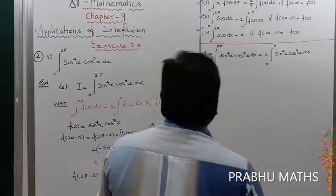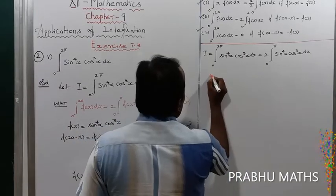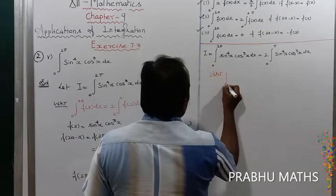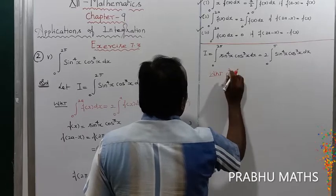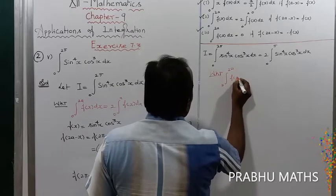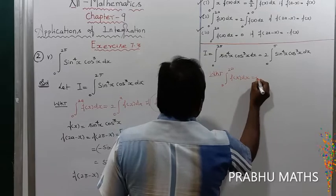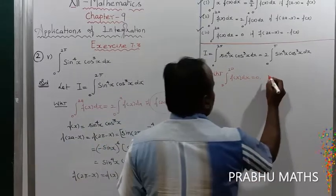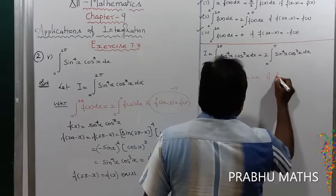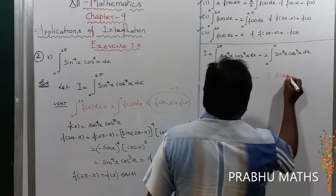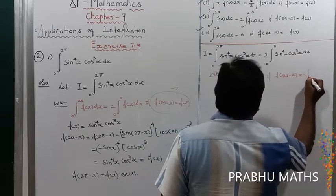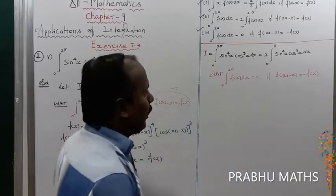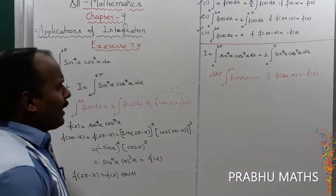Next, for this inner integral we apply another property: the integral of 0 to 2a of f(x) dx = 0, which holds when the condition f(2a - x) = -f(x) is satisfied. Here 2a = π, so we check f(π - x).